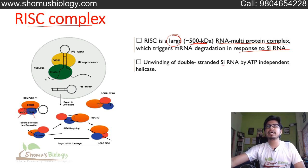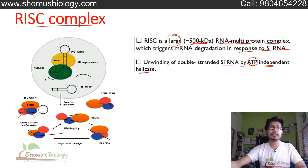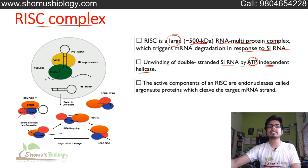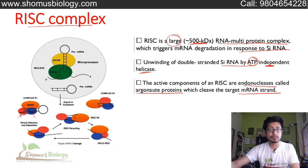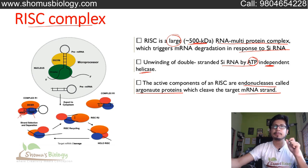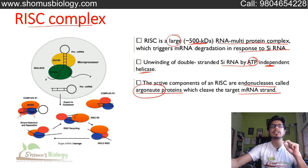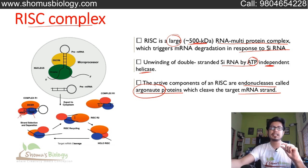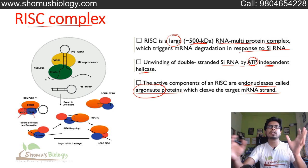Unwinding of double-stranded siRNA is done by ATP-independent helicase — so helicase is used but ATP-independent. However, ATP can be required at the RISC loading stage. The active component of RISC is an endonuclease called Argonaute protein, which cleaves the target mRNA strand, and in this step ATP is not required. The Argonaute protein is also an endonuclease whose job is to cleave the phosphodiester bond of the target mRNA, thus destroying the mRNA and inhibiting the production of any target protein inside the cell.